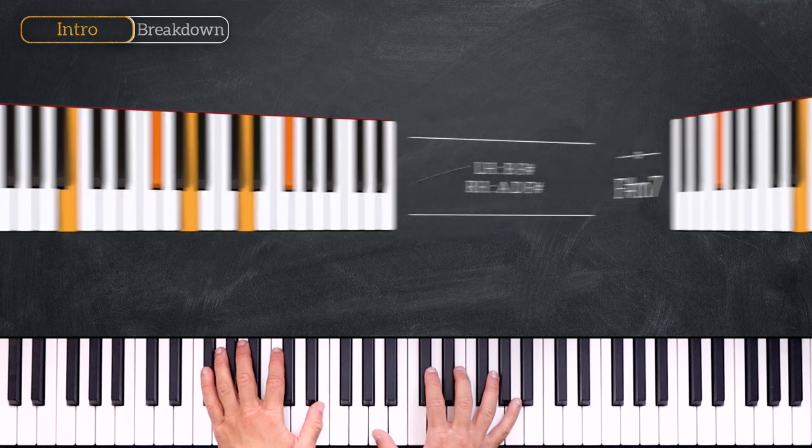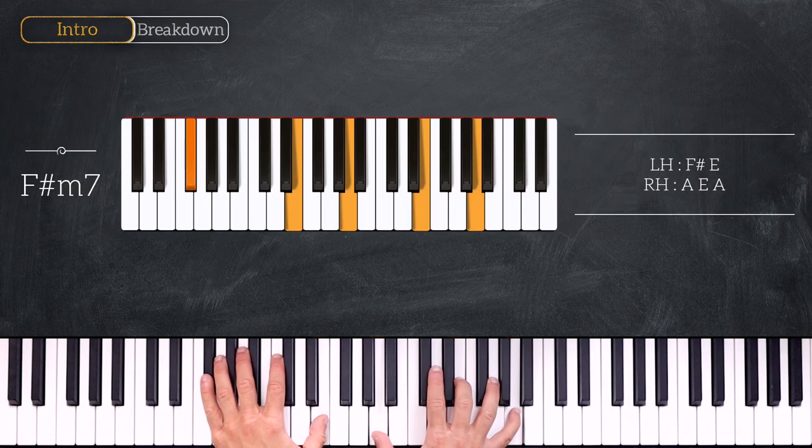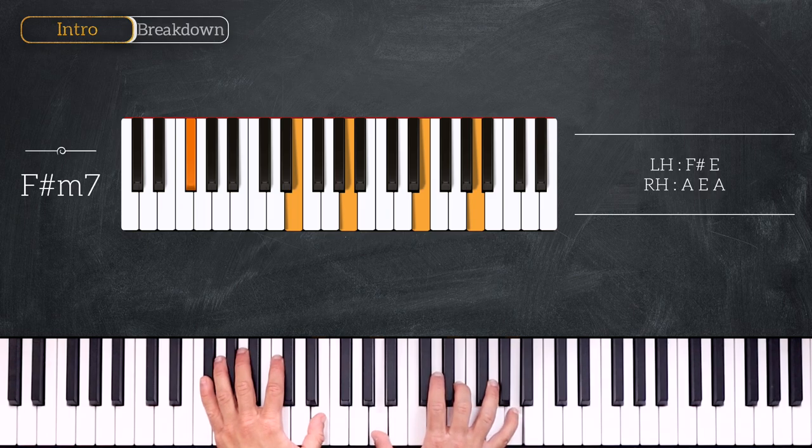Then we'll play F sharp minor 7. F sharp E on the left and A E A on the right hand. Very good.